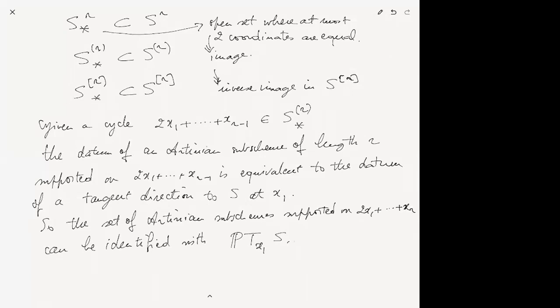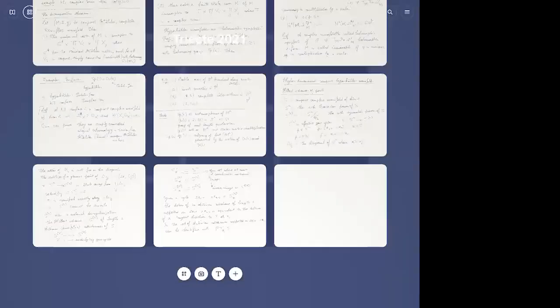The set of Artinian subschemes supported on 2x₁ + x_r can be identified with the projectivization of the tangent space of S at x₁. Specifying a tangent direction is the same as specifying a point of the projectivization of the tangent space. This makes the theorem I'm about to state plausible, though I won't prove it.